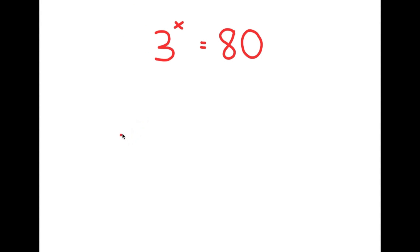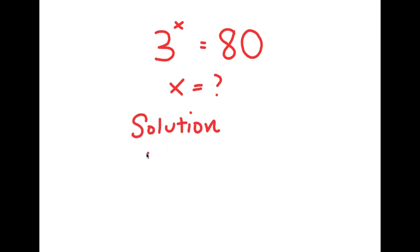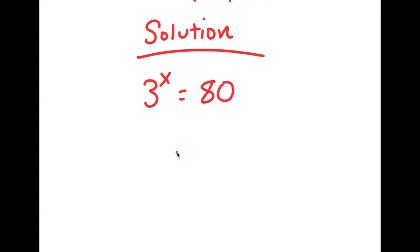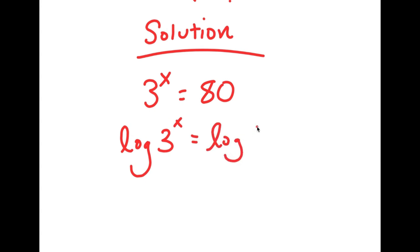All right, so in this problem I have 3 to the power of x is equal to 80, and I want to find the value of x. For my solution, I first start with 3 to the power of x equals 80, and now I'm going to take the log on both sides. So I get log of 3 to the power of x is equal to log 80.